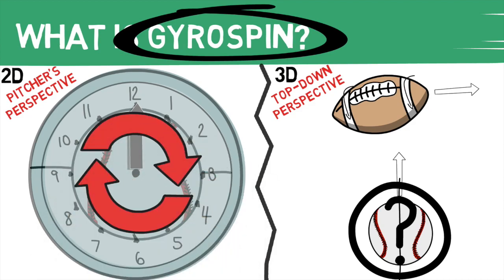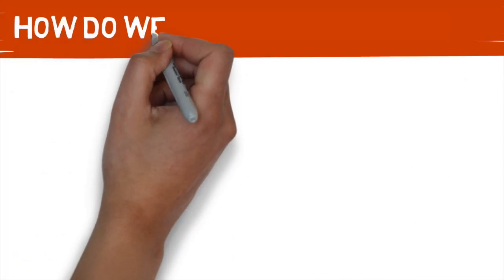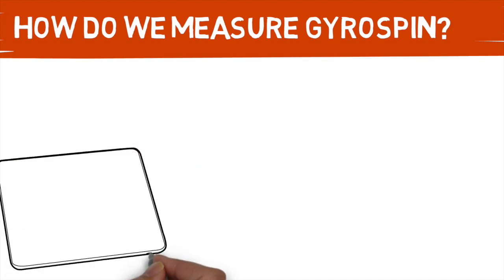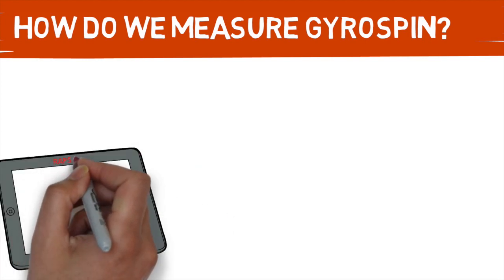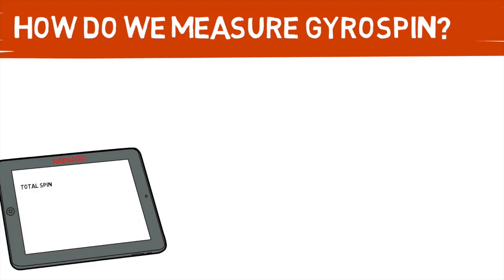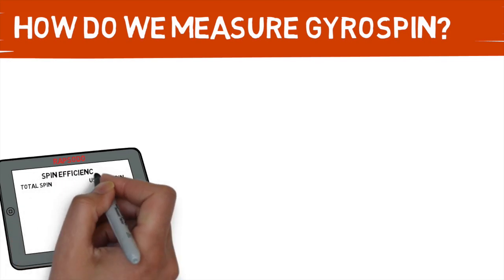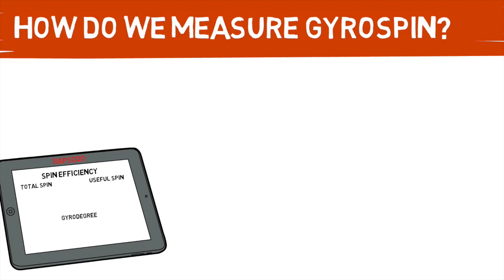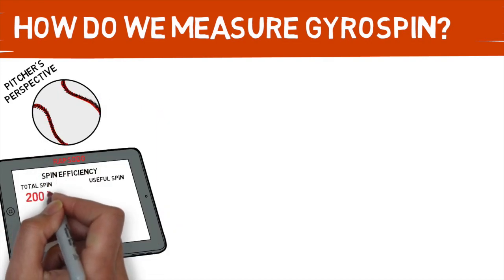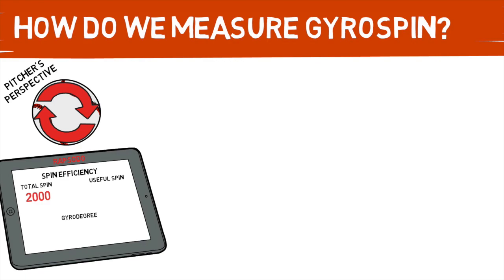So now that we understand the basics of what gyro spin is, how is it measured? The easiest way is by utilizing a Rapsodo, which spits out a couple of useful metrics to describe pitches that have gyro spin. These metrics are total spin, useful spin, spin efficiency, and gyro degree. We've talked about total spin before, but this takes another step forward from that idea. If we're looking at a pitch with 2,000 RPMs but the ball is spinning with pure gyro spin, none of that spin is going to aid in the movement of that pitch, so this pitch would read with a useful spin of zero. This doesn't necessarily mean the pitch is bad — higher or lower spin doesn't equate to good or bad. It's just another characteristic to take into account when designing a pitcher's arsenal.